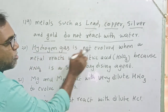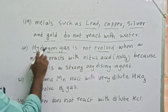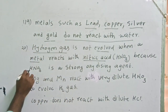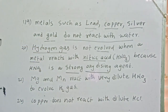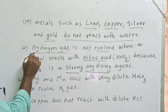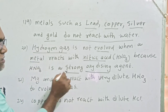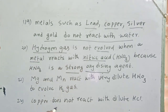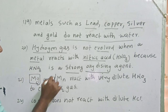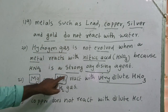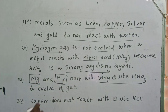Hydrogen gas is not evolved when a metal reacts with nitric acid, because nitric acid is a strong oxidizing agent. Generally metals react with acids and release hydrogen gas, but in the case of nitric acid, hydrogen gas is not released. However, magnesium and manganese are the two metals which react with very dilute nitric acid to evolve hydrogen gas.